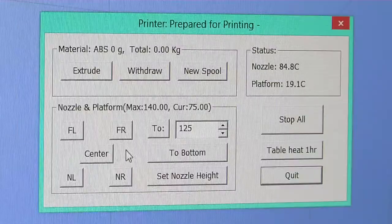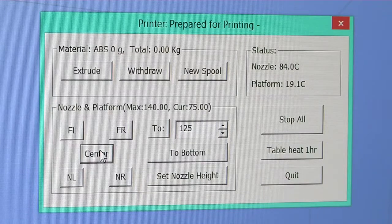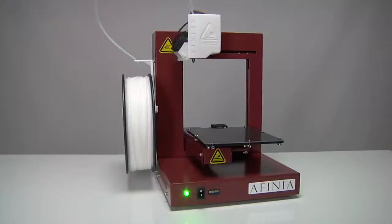Open the maintenance window. Click the center button. Then raise the platform to within a millimeter of the print surface.